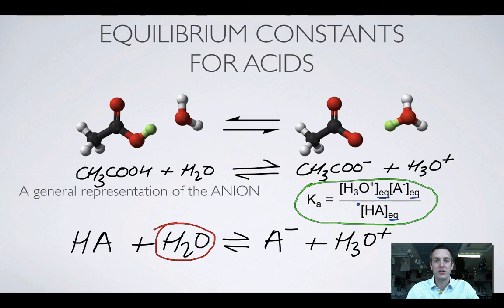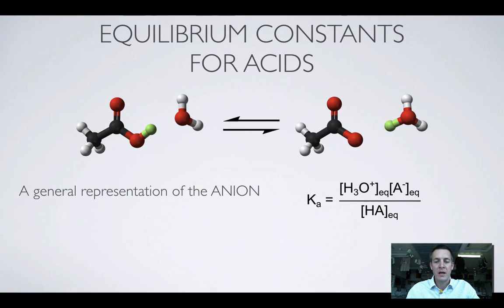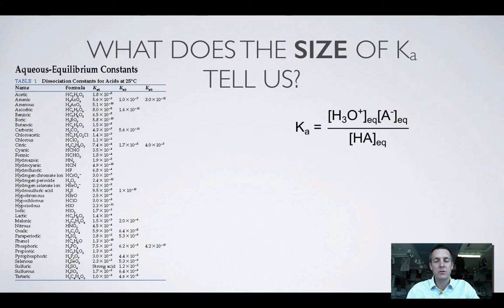So that's what an acid dissociation constant looks like. And hopefully you remember from the work that you did on the equilibrium constants before, is that the bigger K is, the more products form in that equilibrium. And that is absolutely true for acids as well.